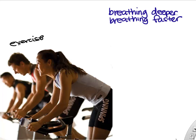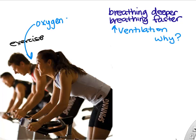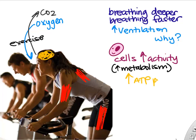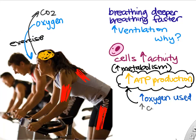You notice this when you exercise — you increase cell metabolism and then you need to start breathing deeper and faster. Why are you ventilating so much when you exercise? Your cells are using up and needing more ATP, so you need to get more oxygen to those cells and more CO2 out of your body. As you produce more ATP, you consume more oxygen and produce more CO2.